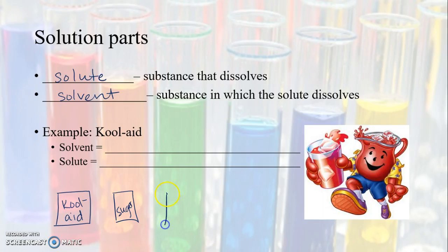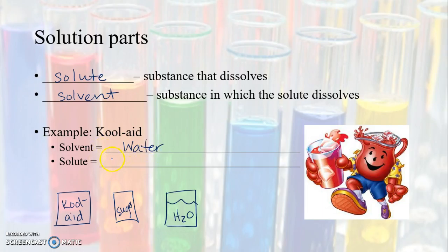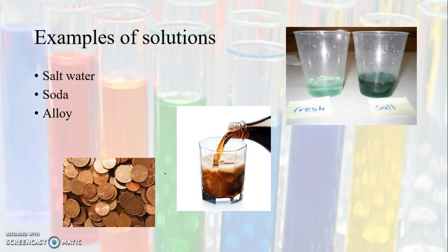Out of these three containers, which one is the solvent — the one that does the dissolving? That would be the water; water is your solvent. The solutes are anything being dissolved: you've got Kool-Aid and sugar, so two solutes and one solvent. Things besides water can also be solvents — oil is an example of a solvent that's not water.